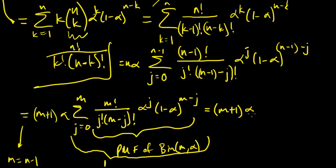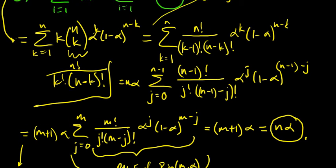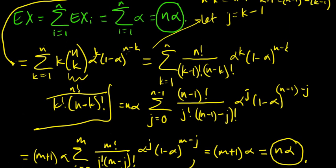So the whole thing, we just get m plus 1 times alpha, and we are in very good shape because m plus 1 is equal to n, and we get n times alpha. Very nice. So and of course that's what we got before, using the much easier path of using the linearity of expectation here.